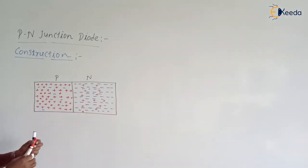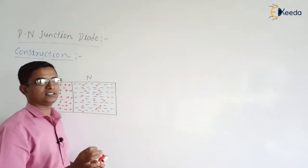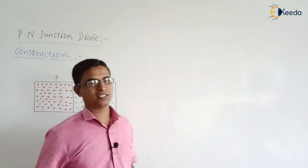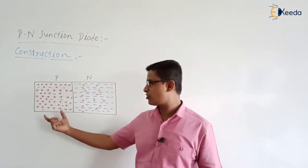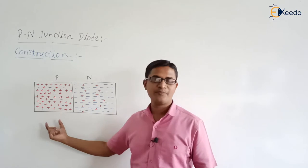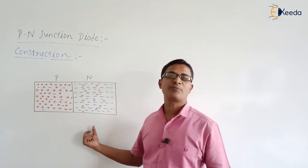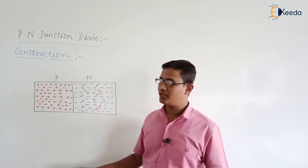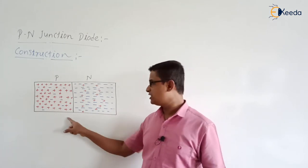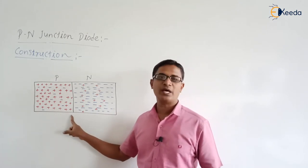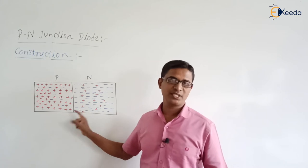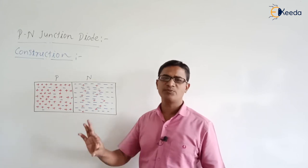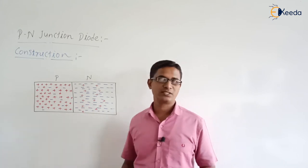So this is the P-N junction. Why is it known as the P-N junction? Because it consists of P-type material and N-type material, and in between these two, here we have the junction — the junction of the two layers. That is why it is known as the P-N junction.